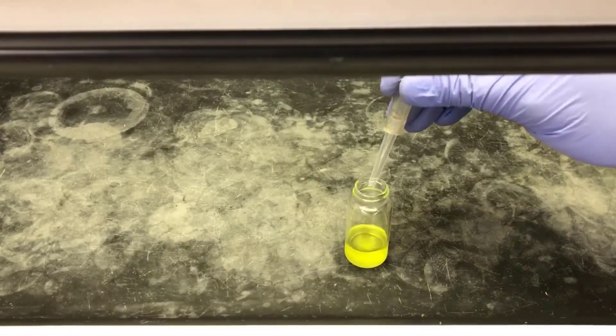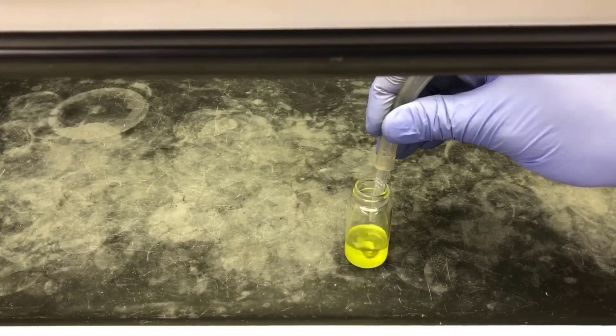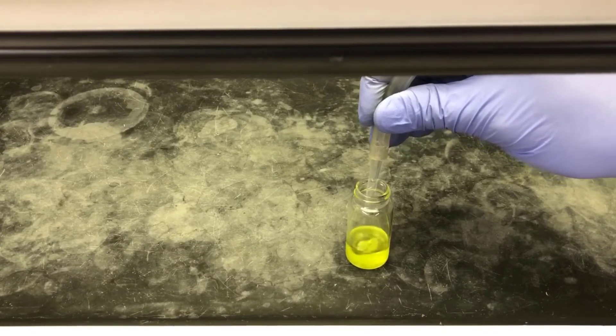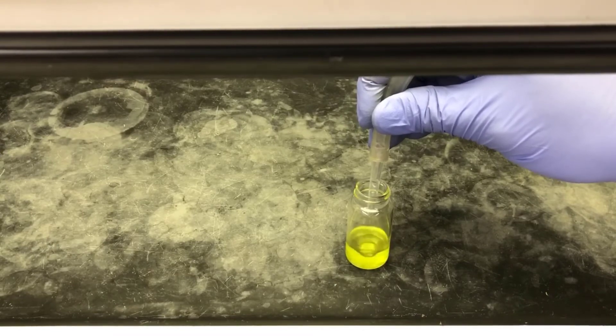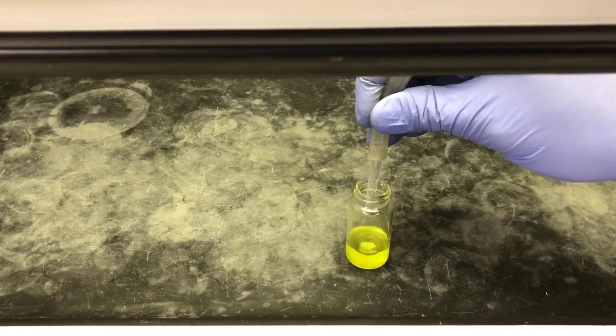In the next step, I'll remove the hexane solvent to isolate citrus oil. I'm doing this step in the fume hood to minimize exposure to vapors. Here I've got a gentle stream of compressed air that I'm blowing inside the vial to evaporate the hexane.